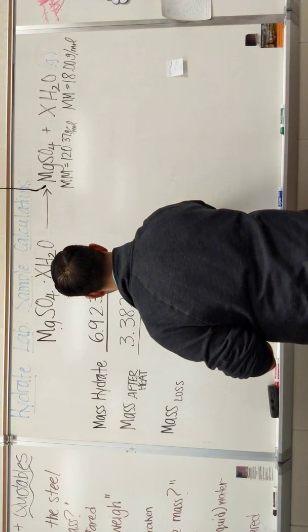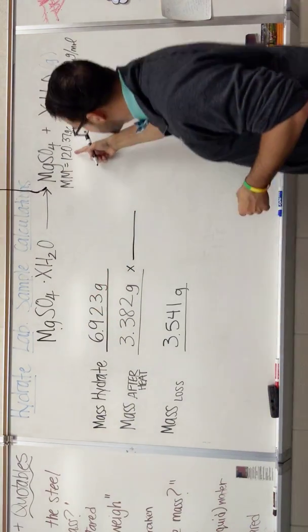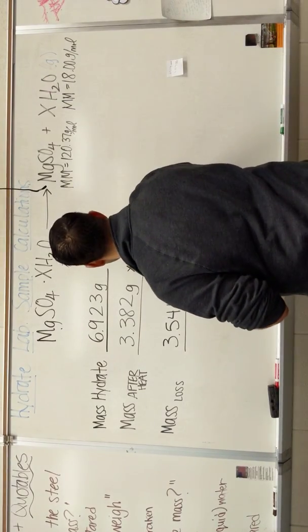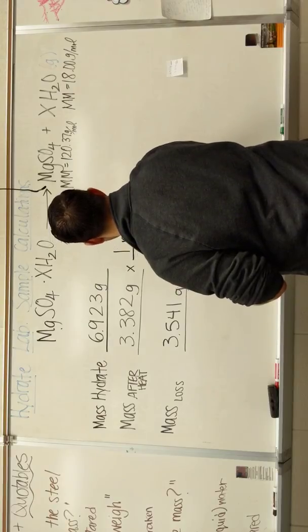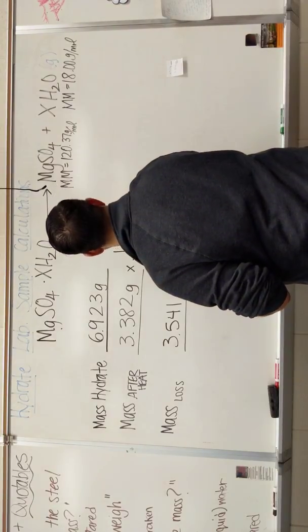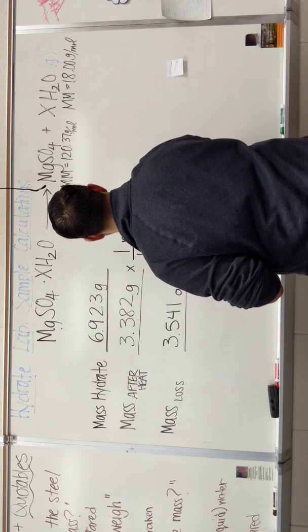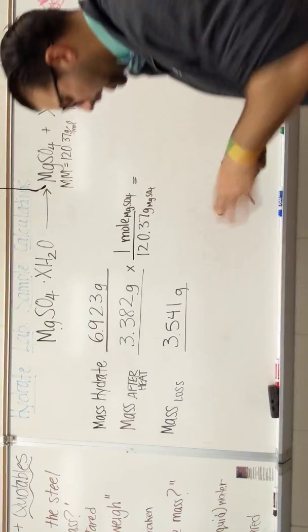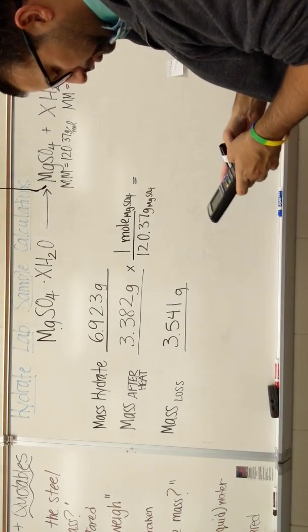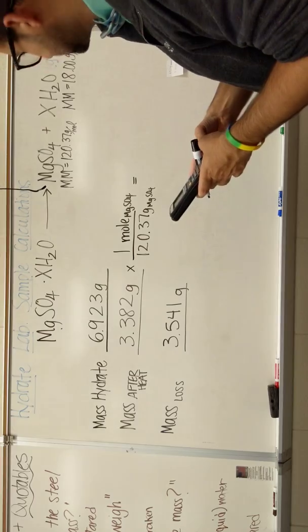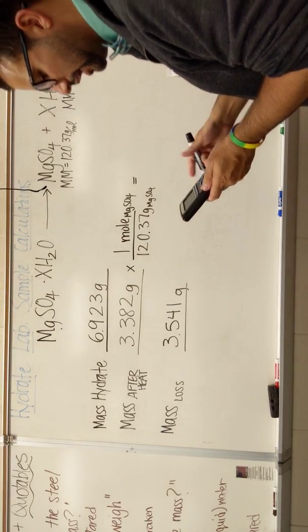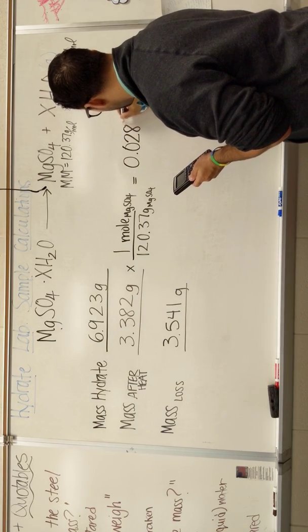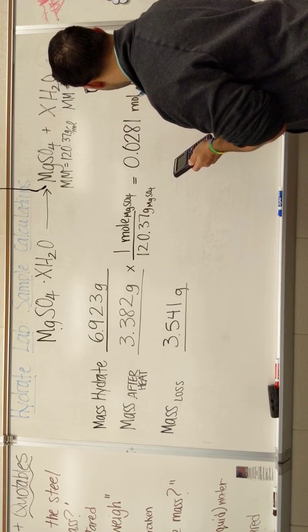So I'm going to convert both of these to moles. If I want to do that, I wrote up here that the molar mass of magnesium sulfate by itself is 120.37. So 1 mole of MgSO4 over 120.37 grams of MgSO4. I'm just converting that to moles. I will get 3.382 divided by 120.37. I get 0.028. I'm going to round up to 1 mole of MgSO4.